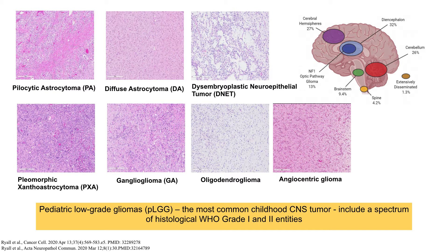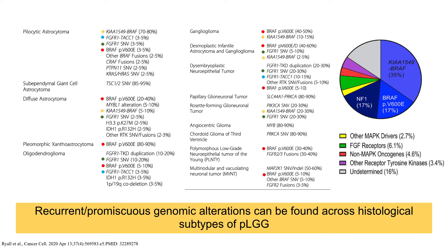Transitioning now to talk about pediatric gliomas — these are really a diverse array of morphologies, some of which overlap with adult diffuse gliomas, but many are unique to this patient population and can occur throughout the neuroaxis. What makes this even more challenging is that many different morphologies have overlapping driver events, indicating the promiscuity of many of the MAP kinase pathway alterations in pediatric low-grade gliomas.